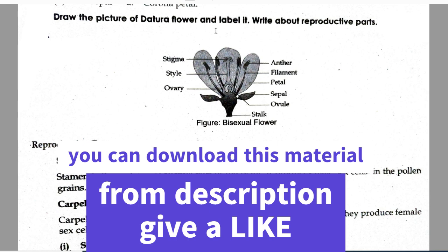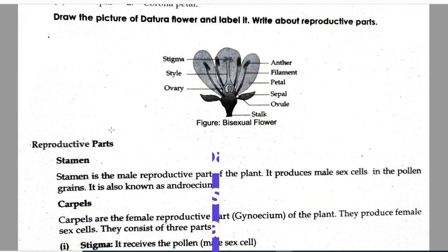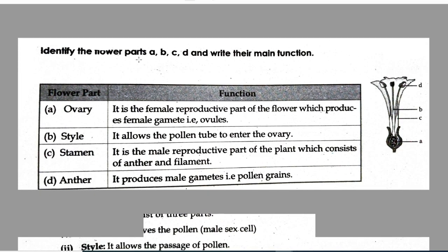Draw the picture of a datura flower and label it. Write about reproductive parts. This is the datura flower and you have to write the parts of the flower also. Identify the flower parts A, B, C, D and write their main functions.